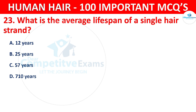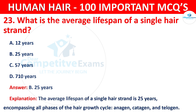The correct answer is B — 2 to 5 years. The average lifespan of a single hair strand is 2 to 5 years, encompassing all phases of the hair growth cycle: anagen, catagen, and telogen.